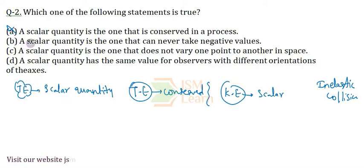Coming to option B, option B says that a scalar quantity is the one that can never take negative values. So, as we know, the potential, potential is a scalar quantity. We have seen that it has taken positive value and also sometimes negative values. Similarly,